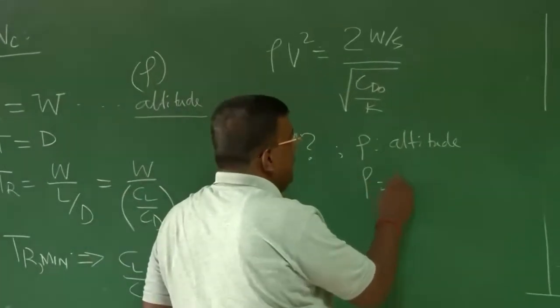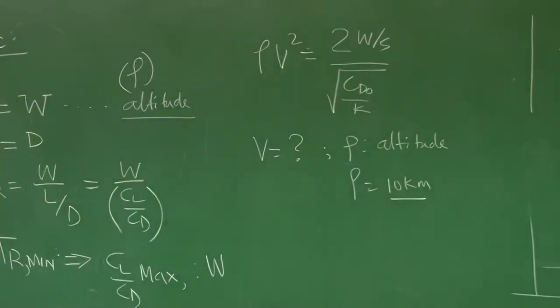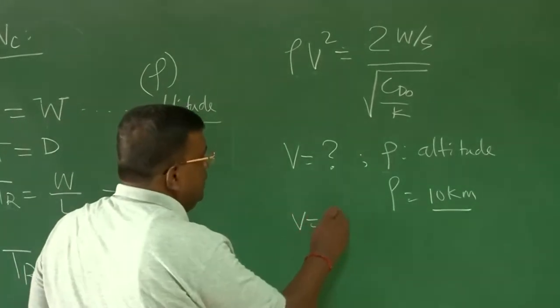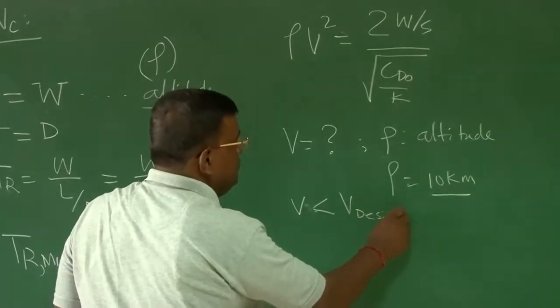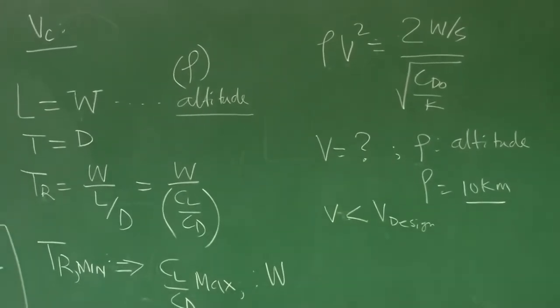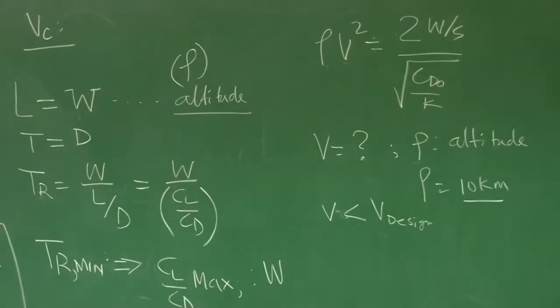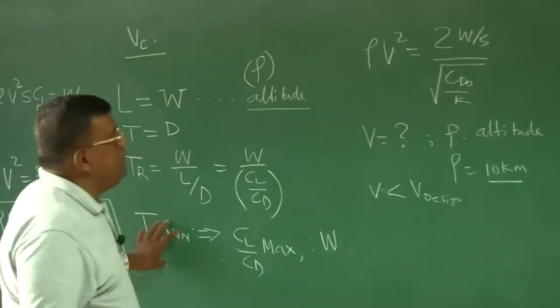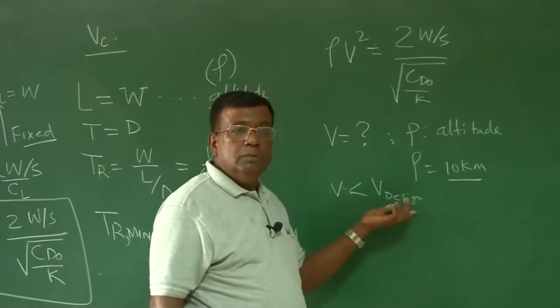For example, if you want to fly at 10 kilometer and you are finding that for the given wing loading and given CD0, V is coming less than the V where you want to design. Possible? You may be planning to design an airplane for V equal to 150 meter per second, but under putting this condition for a given initial wing loading and k means aspect ratio, you may find if you want to satisfy this condition, V is coming lesser than V design. So what do we do? What is the option?